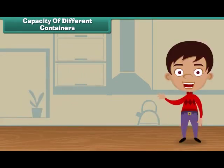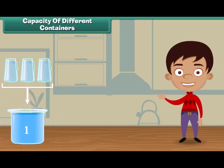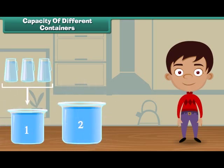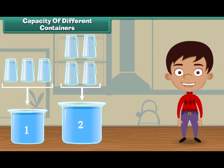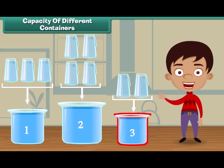Friends, we have seen that vessel one is filled with three jugs of water. Vessel two is filled with four jugs of water, and vessel three is filled with two jugs of water. It means vessel three holds the least water, and vessel two holds the most water.